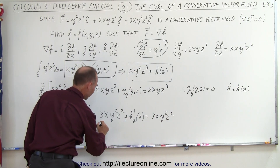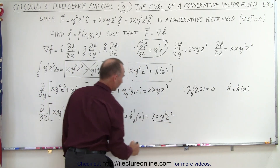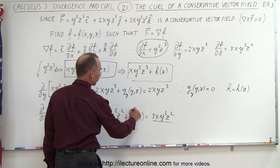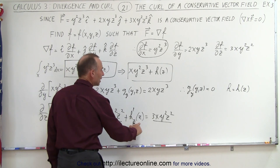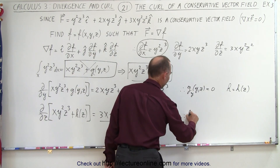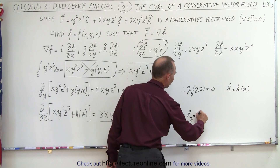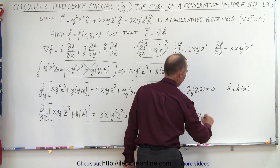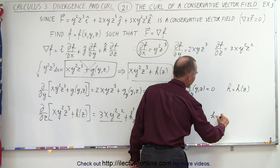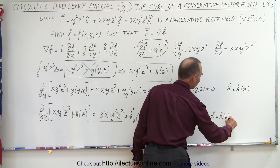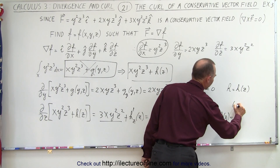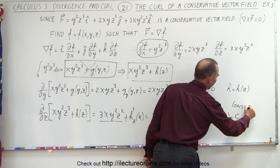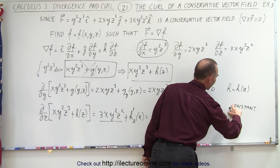Since 3xy²z² equals 3xy²z², h prime — the derivative of h with respect to z — must be equal to zero. Therefore h of z must be equal to a constant only.